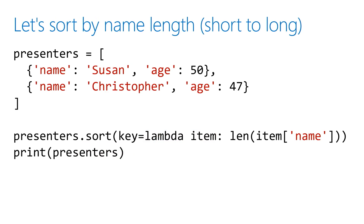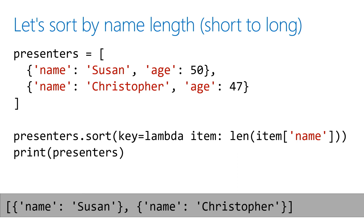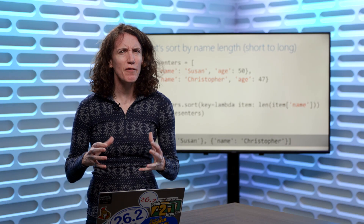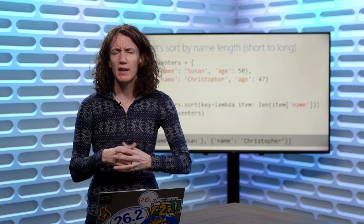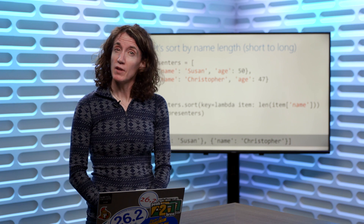Instead of passing in a function name, you can declare the entire function and call it all in one line of code. You can be more clever than that — here I've actually modified the code so it returns the length of the name, which would sort by the length of the name. In this case, it'll be Susan then Christopher, because the name Susan uses fewer characters than Christopher. A lambda function is a really clever tool — not something you have to use, but something you're going to encounter. It can make for some very clean code. So let's try that out inside the actual code itself.